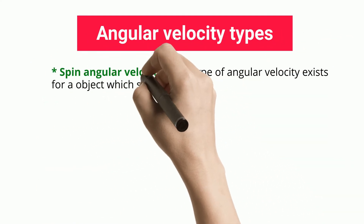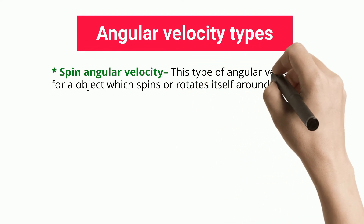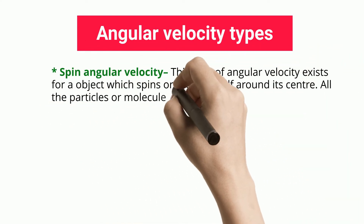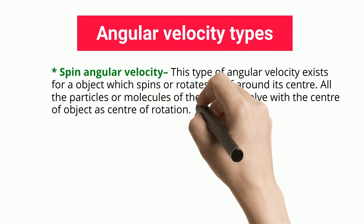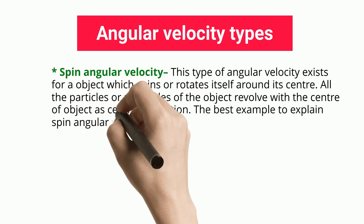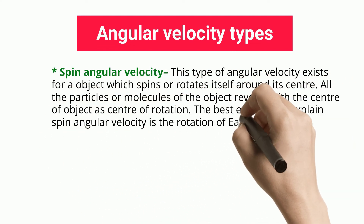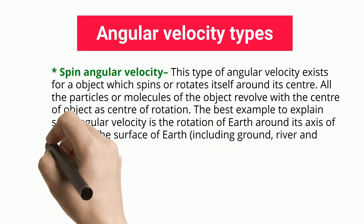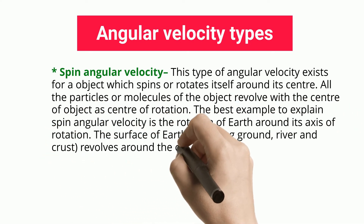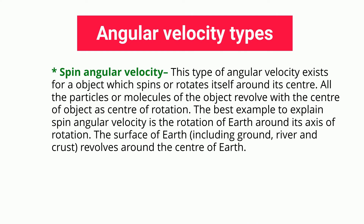The second type is spin angular velocity, which exists for an object that spins or rotates around its own center. All the particles or molecules of the object revolve with the center of the object as the center of rotation. The best example is the rotation of Earth around its own axis, where the surface including ground, rivers, and crust revolves around Earth's center.